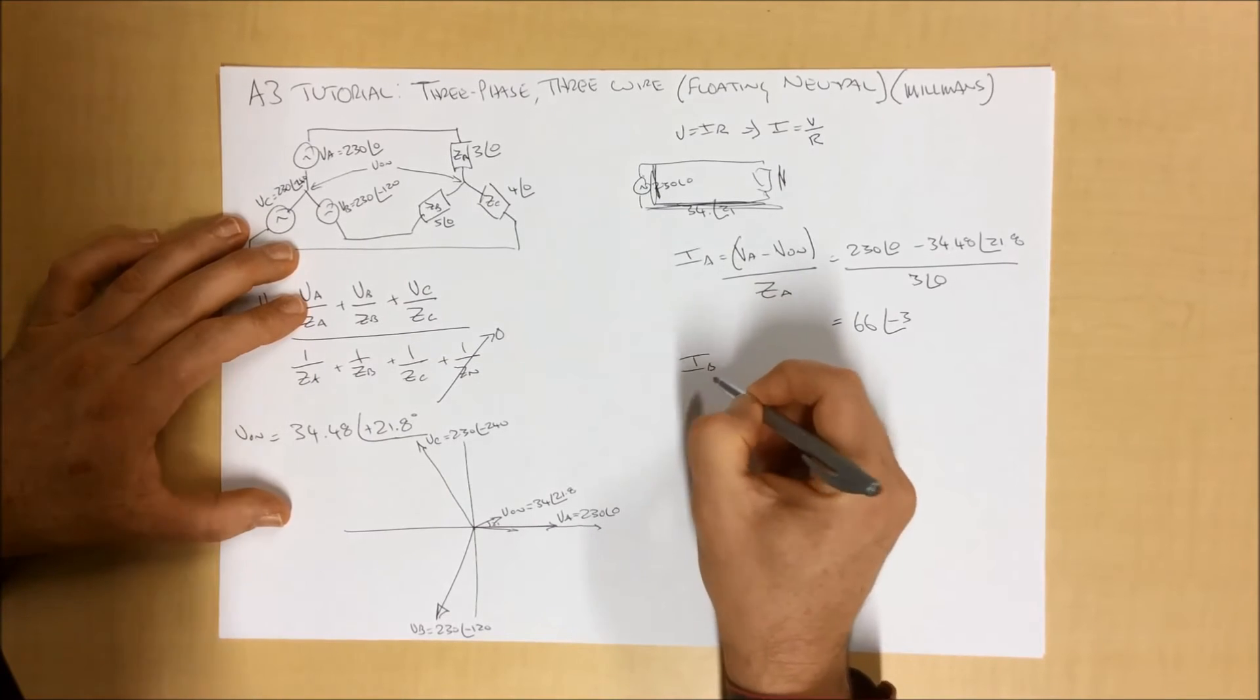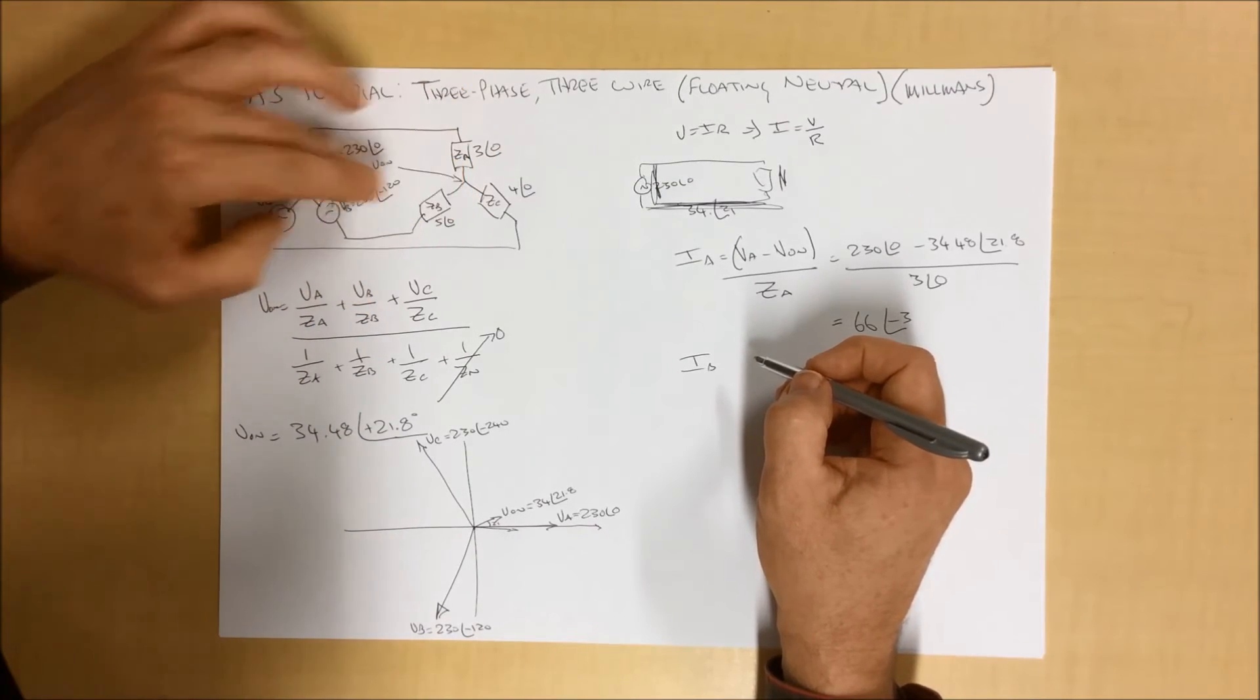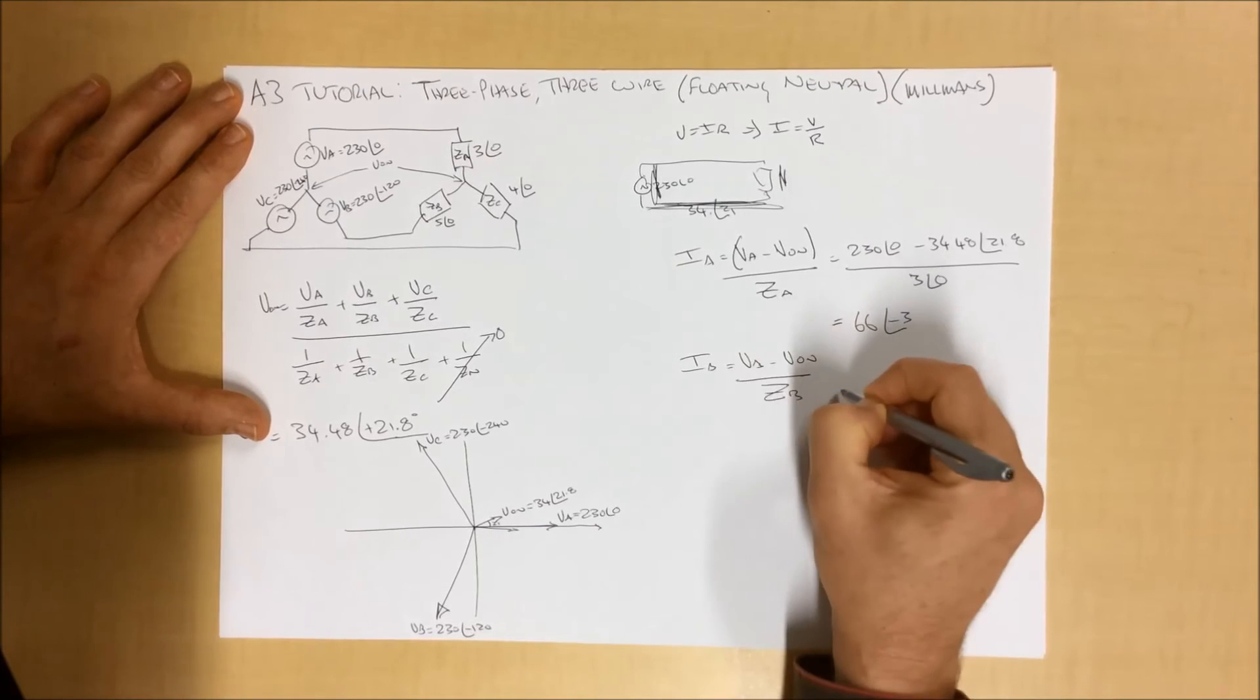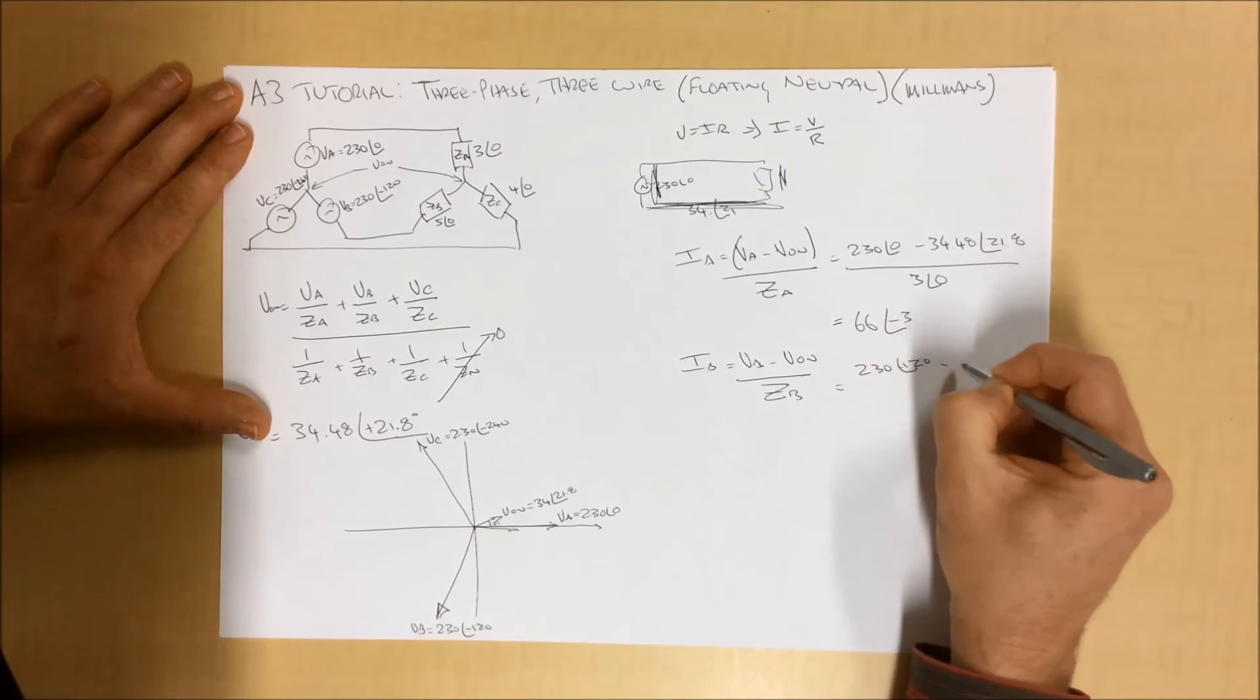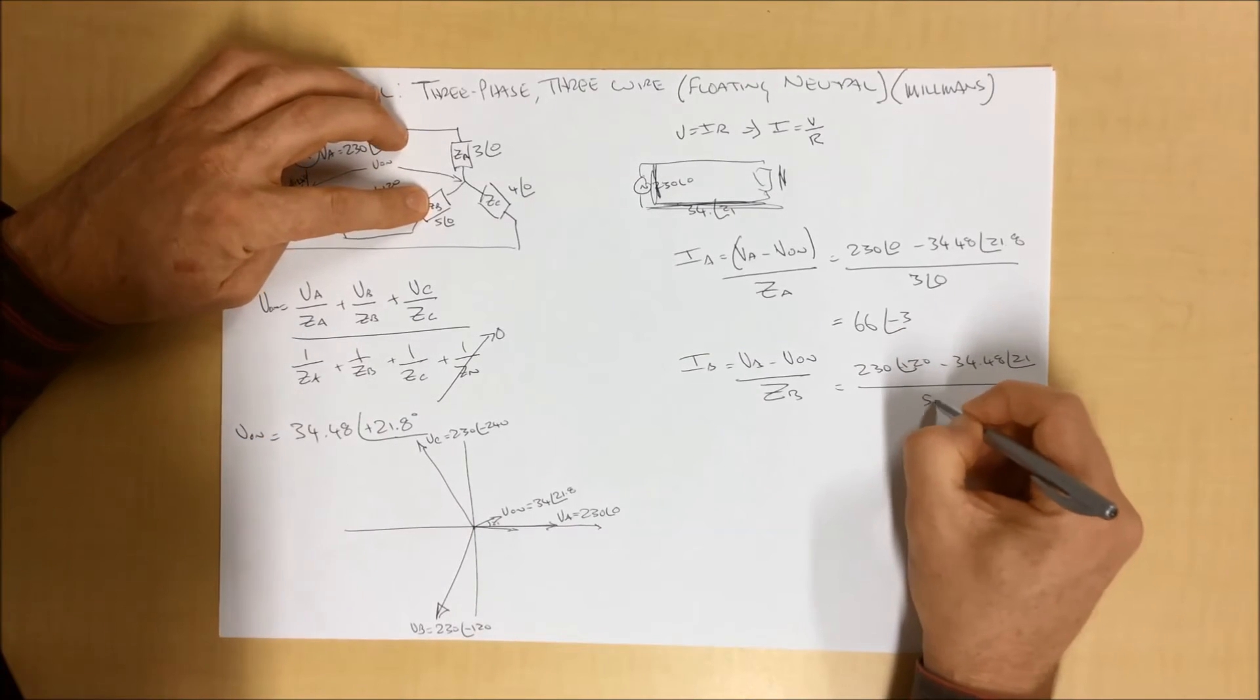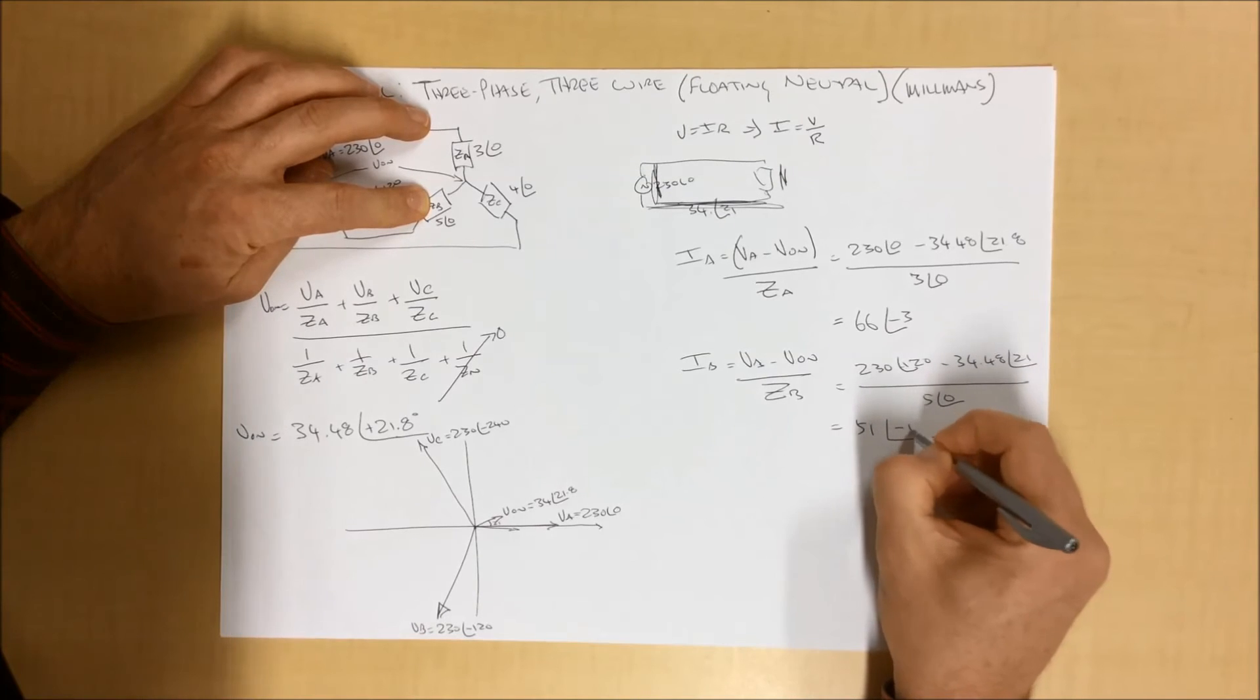To find the current through phase B, it's exactly the same process. The voltage of phase B over this, subject to that there. So it's VB minus VON over ZB, which is 230 minus 120, minus 34.48 at 21, all over our impedance for phase B is 5 ohms. And that will give us a solution of 51 at an angle of minus 124.